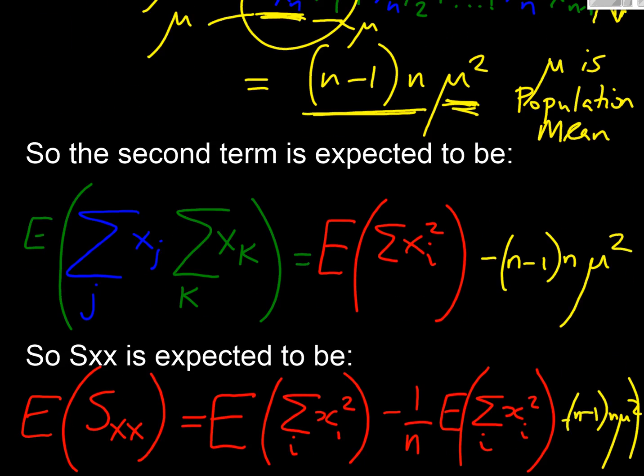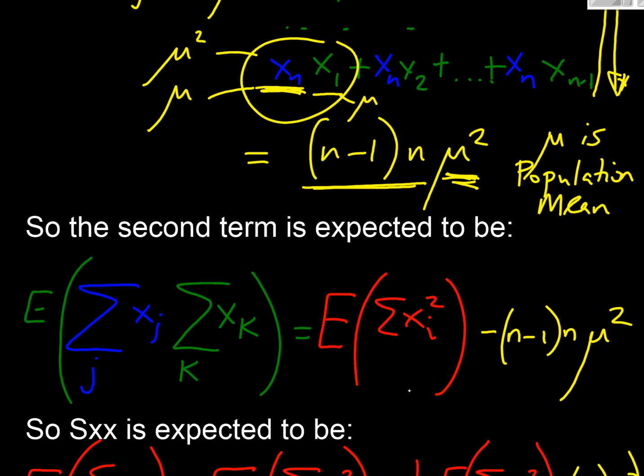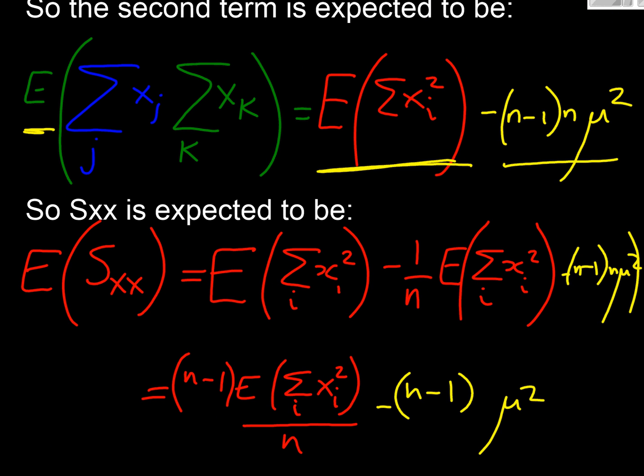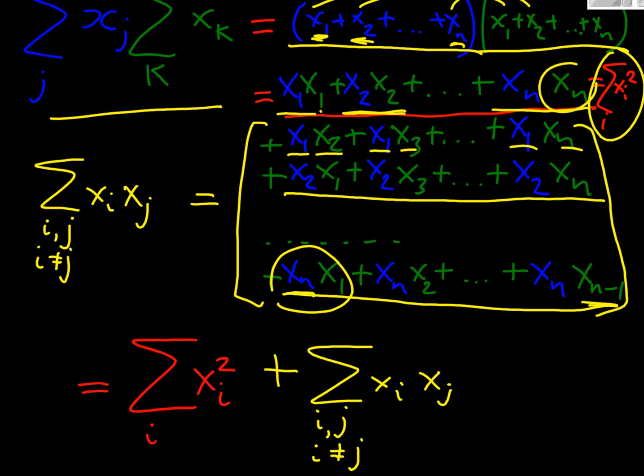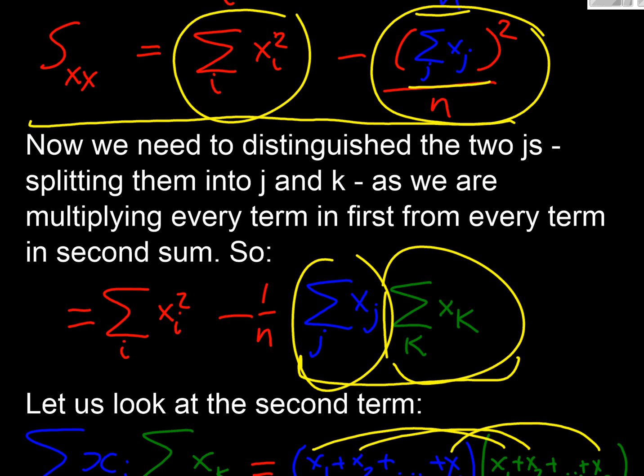But it does mean that that term that we were looking at is now in our two parts: that's our second part of that term, and here is our expected value of our xi squareds if we're looking at expectation, what we're expecting to see there. And when we want to look at our expected value of our sum of squares, well if we go back up further, that's our Sxx isn't it, here's our sum of squares.